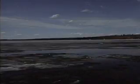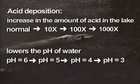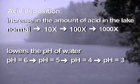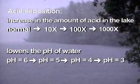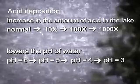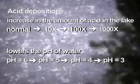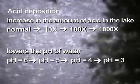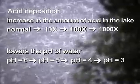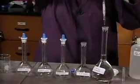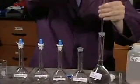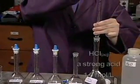Now let's return to the problem of an aquatic ecosystem threatened by acid deposition. A healthy lake has a pH of 6. To create solutions of pH 6 and lower for studies, biologists can dilute a strong acid of known concentration.